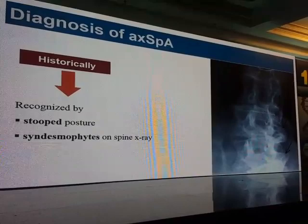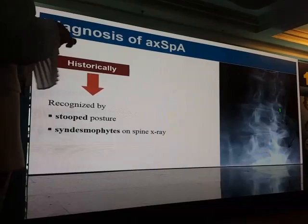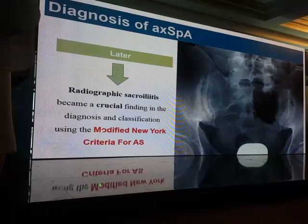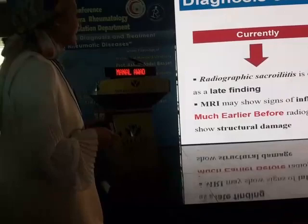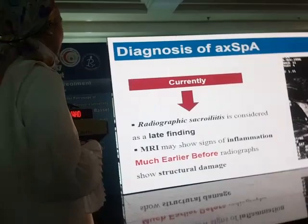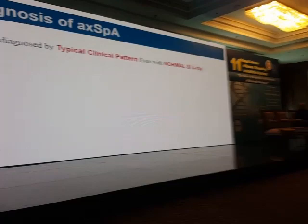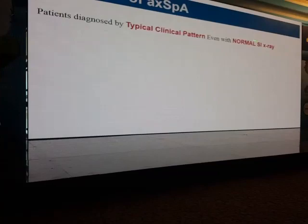Previously, SpA was diagnosed or recognized by the stooped posture of the patient and syndesmophytes found on plain X-ray. Later on, radiographic sacroiliitis became a crucial finding for diagnosis and classification using the modified New York criteria for AS. More recently, radiographic sacroiliitis is considered a late finding, and MRI may show signs of inflammation much earlier before radiographs show structural damage. So patients may be diagnosed by a typical clinical pattern even with a normal sacroiliac joint.